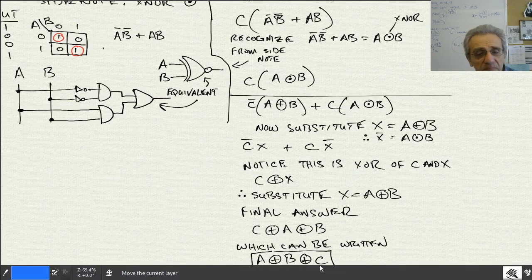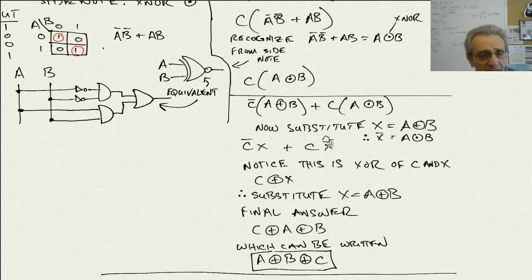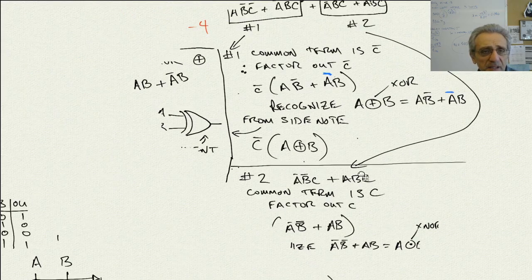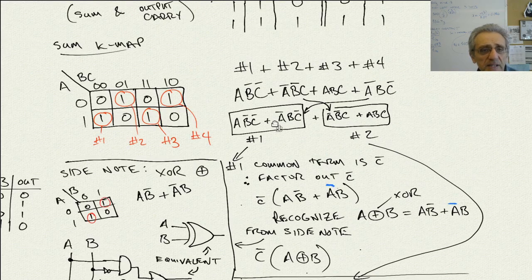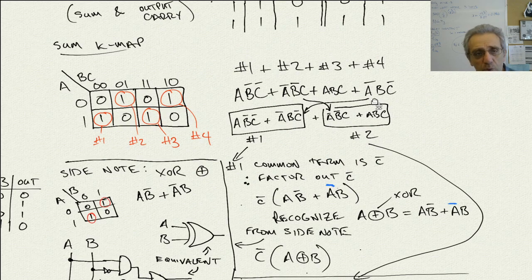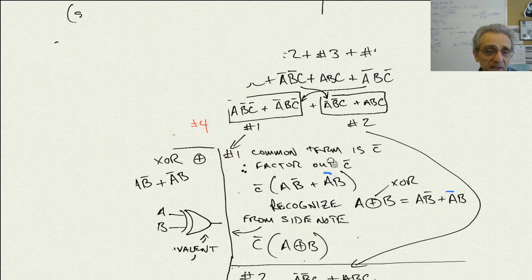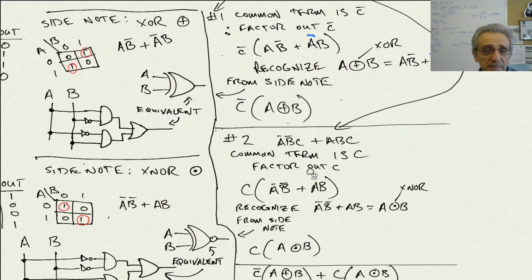So essentially we've taken that long sum-of-products expression and simplified it all the way down to A XOR B XOR C. This is much simpler not only to write, but also to draw the circuit diagram, as we'll see in a moment.